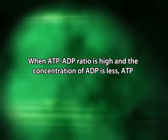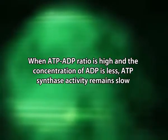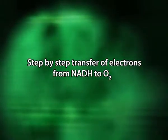In situations where the ATP-ADP ratio is high, the concentration of ADP is less. ATP synthase activity remains slow, which is not sufficient to drive proton flow down into the matrix, and the electrochemical gradient is maintained. In such situations, a high electrochemical gradient causes very slow electron transport, which means slow oxidation of NADH and consequently slow generation of NADH — that is, a slow Krebs cycle and glycolysis. Now, one more aspect of electron transfer in the electron transport chain is the step-by-step transfer of electrons from NADH to O2.